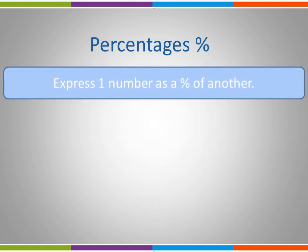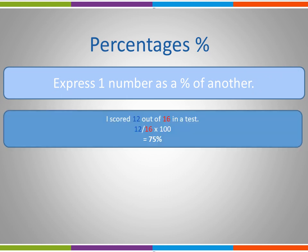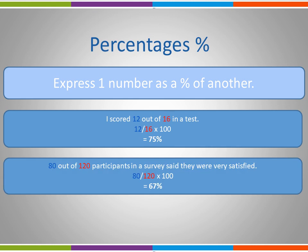Let's look at the first of these: how to express one number as a percentage of another. For example, I scored 12 out of 16 in a test. In order to know what grade that would be, I need my answer as a percentage. So I would take 12, divide it by 16 and multiply it by 100. We always multiply by 100 when we're going to express an answer as a percentage. So 12 divided by 16 multiplied by 100 gives us 75%. For a second example, 80 out of 120 participants in the survey said they were very satisfied. So 80 divided by 120 multiplied by 100 gives us 67%. All we do is take one number, divide it by the other and multiply it by 100 to get our percentage.